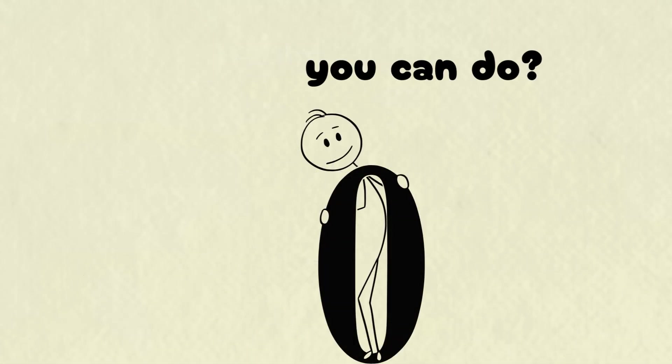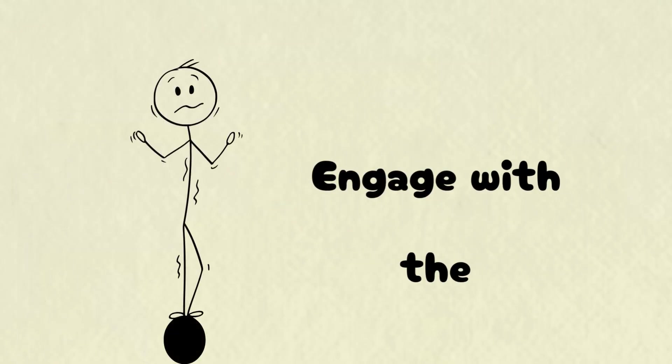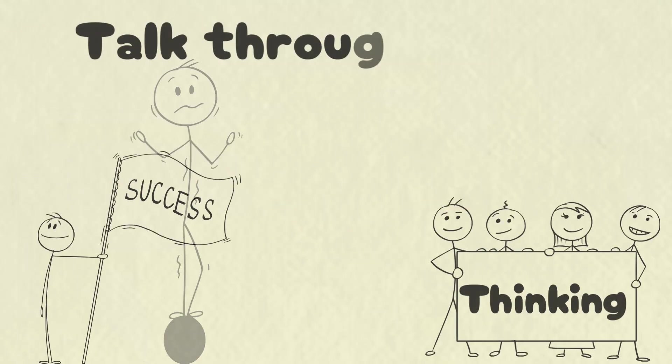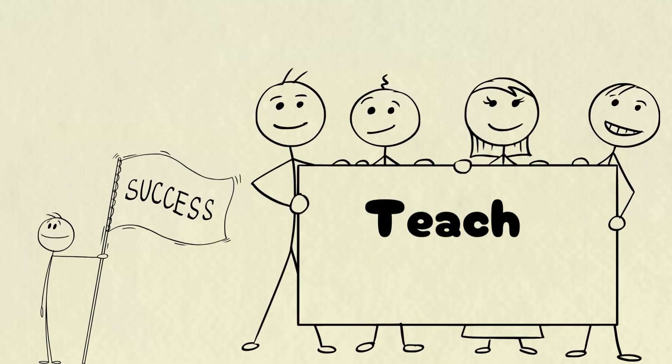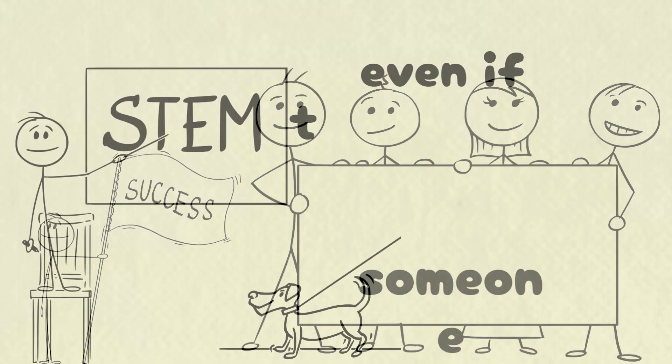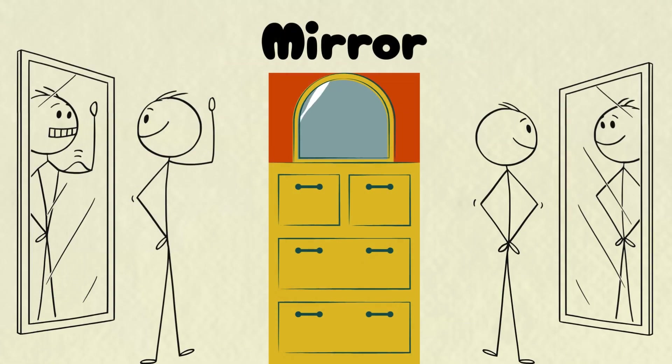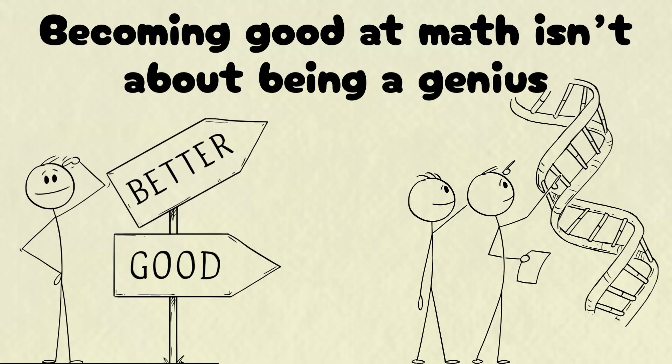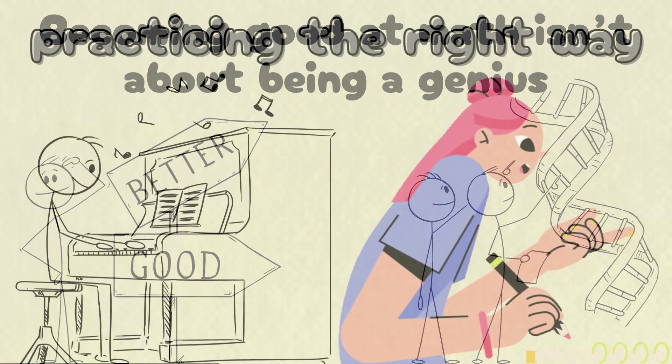What you can do. Start asking why behind every formula. Engage with the problems. Talk through your thinking. Try teaching a concept to someone else, even if that someone is your dog or your mirror. Because here's the truth. Becoming good at math isn't about being a genius. It's about practicing the right way.